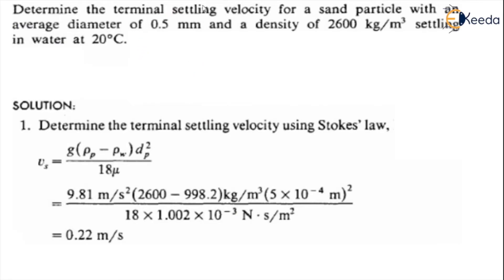Determine the terminal settling velocity for a sand particle with an average diameter of 0.5 mm and a density of 2600 kg per meter cube settling in water. Here we are using terminal settling velocity with Stokes law.